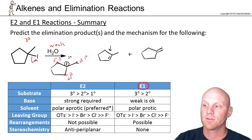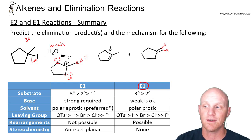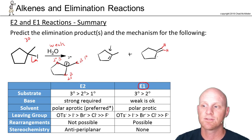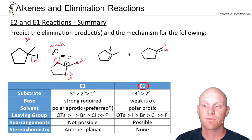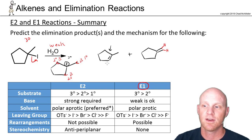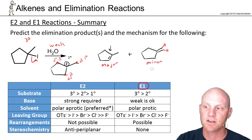Neither regioisomer is capable of cis-trans isomerism. The one on the right has two identical groups on one side of the alkene. The ring product, in a small ring, requires at least an eight-membered ring to have a trans double bond, so this one is definitely cis — trans isn't even possible. Zaitsev's rule will be followed for E1, so the more substituted alkene is the major product and the Hofmann product is minor.